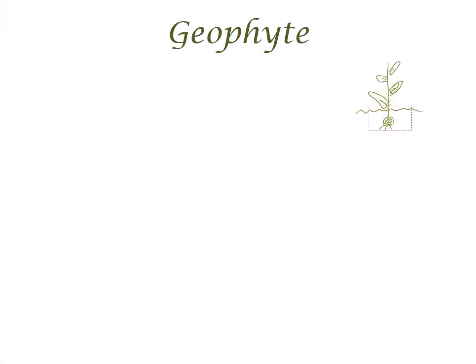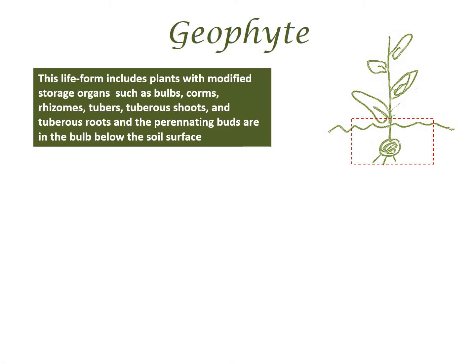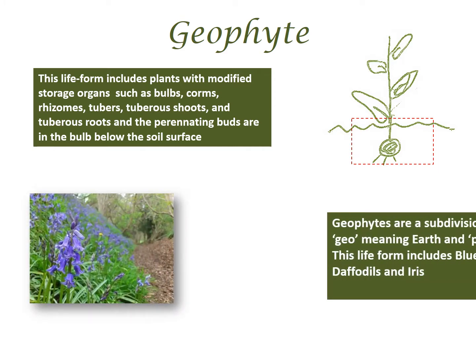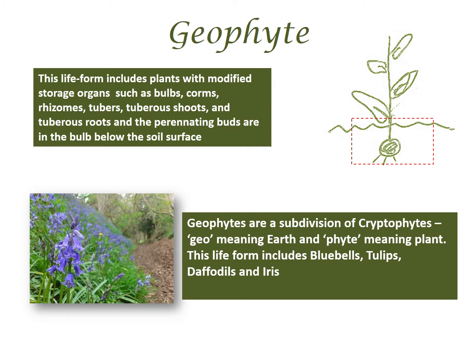The geophyte lifeform includes plants with modified storage organs such as bulbs, corms, rhizomes, tubers, tuberous shoots and tuberous roots. The perennating buds are in the bulb below the soil surface. Geophytes are a subdivision of cryptophytes — geo meaning earth and phyte meaning plant.